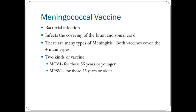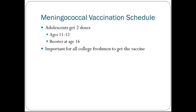The meningococcal vaccine protects against a bacterial infection that infects the covering of the brain and spinal cord. There are many types of meningitis; both vaccines cover four main types. There are two kinds of the vaccine: the MCV4 for those under 55 years old, and the MPSV4 for those 55 years and older. Adolescents get two doses at ages 11 to 12 with a booster at 16, though some parents choose to give the vaccine at ages 13 to 15 with boosters at 17 to 18. It is important that all college freshmen get this vaccine before going off to college.